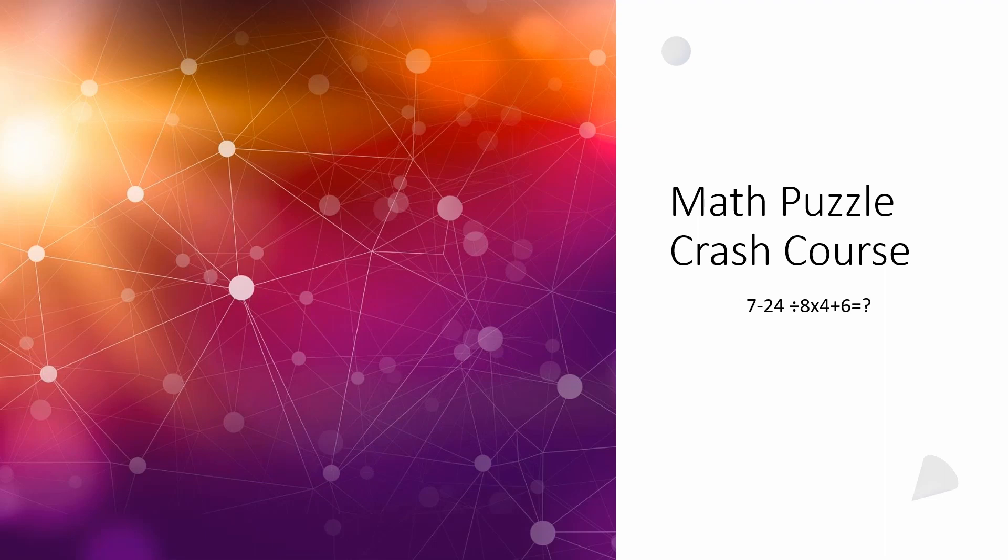Okay, I wanted to cover a quick puzzle here. This one is 7 minus 24 divided by 8 times 4 plus 6.